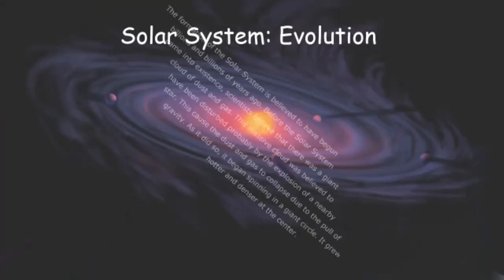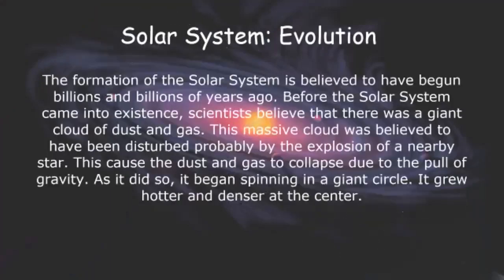Solar system evolution. The formation of the solar system is believed to have begun billions and billions of years ago. Before the solar system came into existence, scientists believe that there was a giant cloud of dust and gas. This massive cloud was believed to have been disturbed, probably by the explosion of a nearby star. This caused the dust and gas to collapse due to the pull of gravity. As it did so, it began spinning in a giant circle and grew hotter and denser at the center.